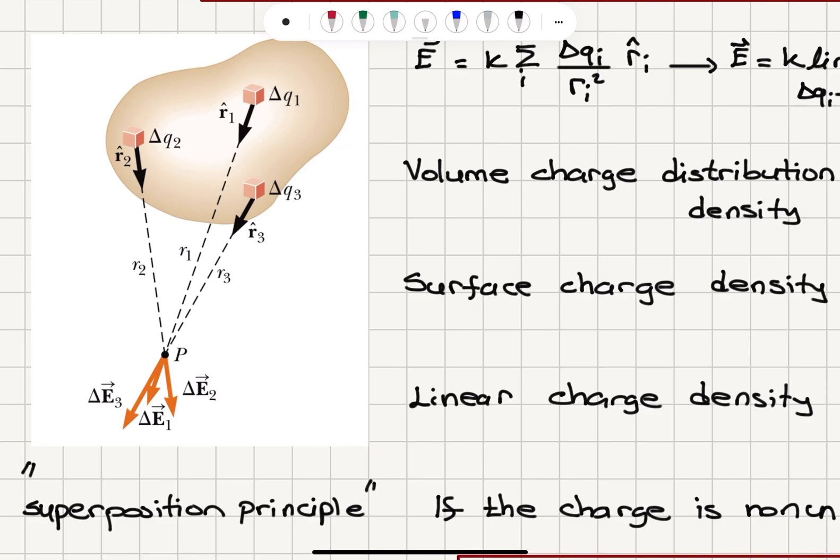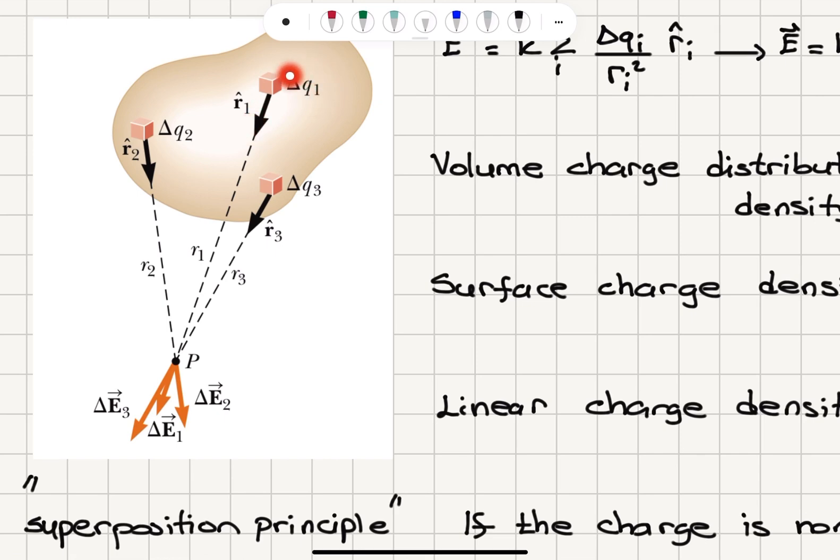For each small charge element, we can define a unit vector, for example, for delta Q1, R1 hat.